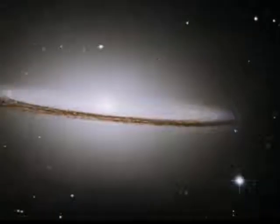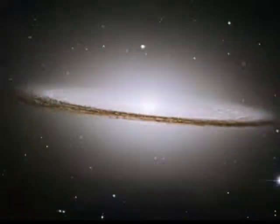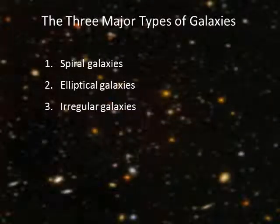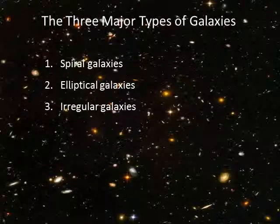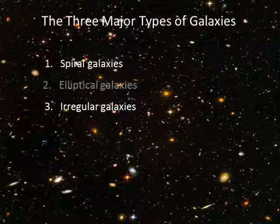Galaxies are so beautiful. If you have the time, look at the Hubble website gallery. You can enjoy the wide variety of gorgeousness our universe has to offer. If you look at galaxies long enough, you're likely to agree with astronomers that galaxies fall into three major types: spiral, elliptical, and irregular.